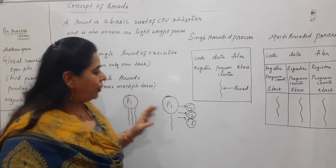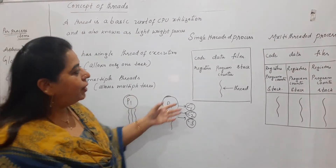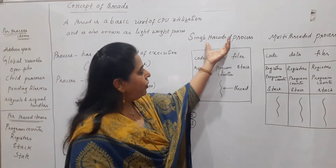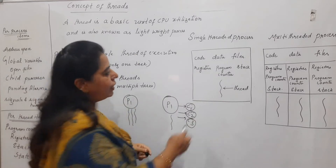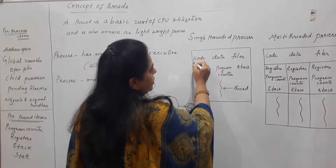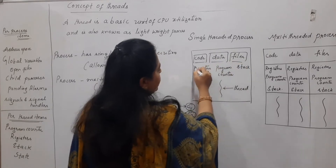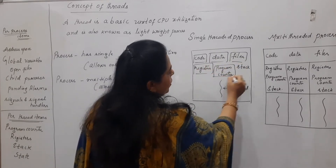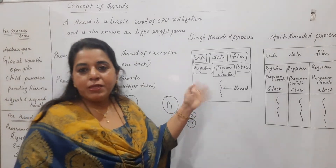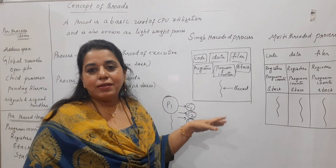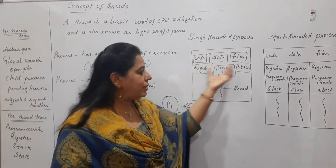If you try to understand the thread and process concept, look here: if there is a process, by default it is a single thread process. That thread has got its code section, data section, files, registers, program counter, and stack. This is what the process is. If this process creates another child process, that process will also have its own code, data, files, registers, and stack.